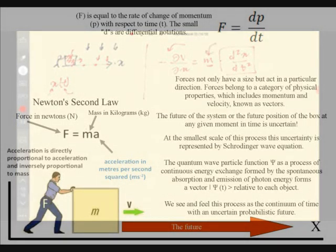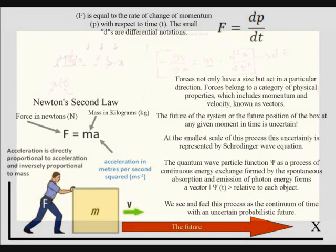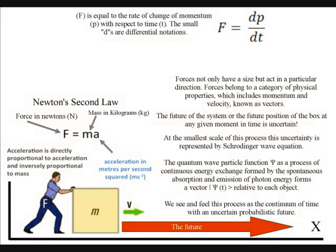This description of the motion is a differential equation. If you solve this differential equation you will get a position function that will give you the future of the system or in other words the future position of the box at a given moment in time.